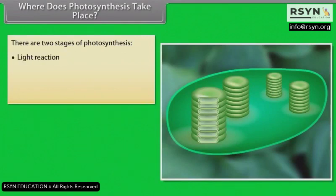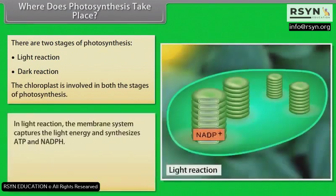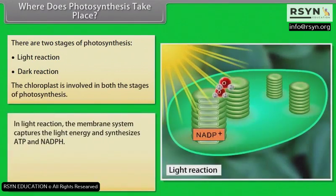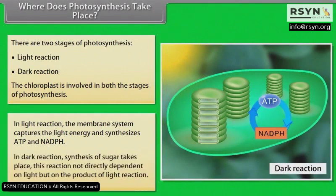There are two stages of photosynthesis: the first stage is the light reaction and the second stage is the dark reaction. In the light reaction, the membrane system captures light energy and synthesizes ATP and NADPH. In the dark reaction, synthesis of sugar takes place; this reaction is not directly dependent on light, but on the products of the light reaction.